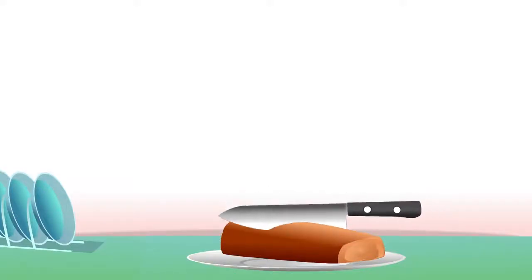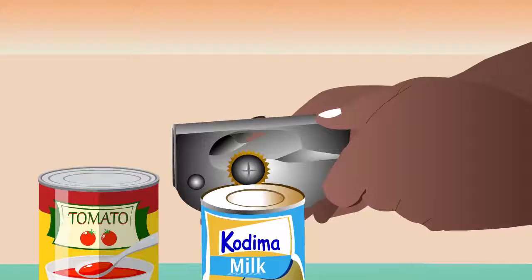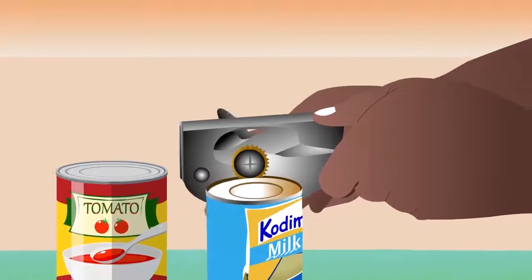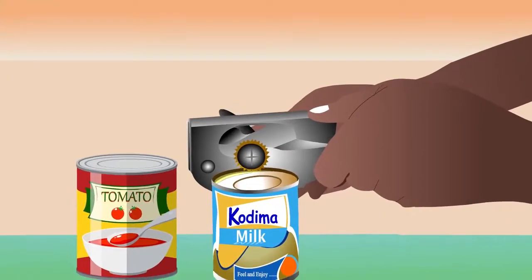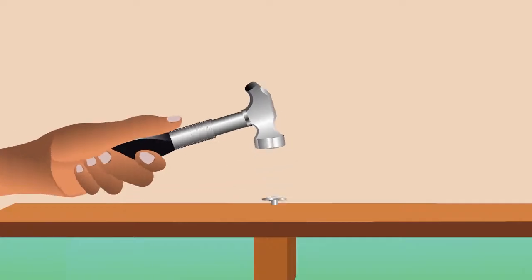A knife is used to split or cut things such as bread and tomatoes. A tin cutter is used to open contents such as tinned tomatoes. And the hammer is used to hit nails into wood.